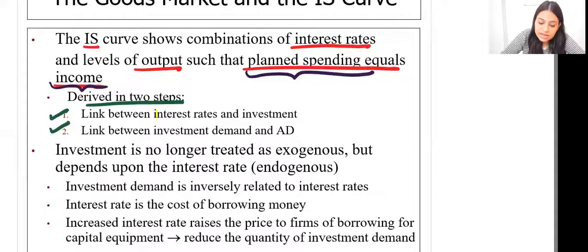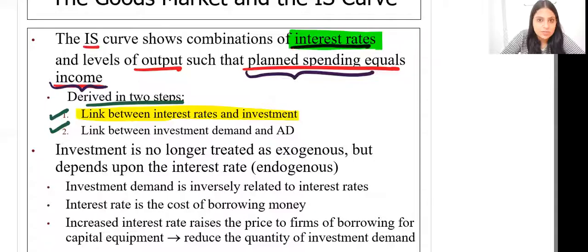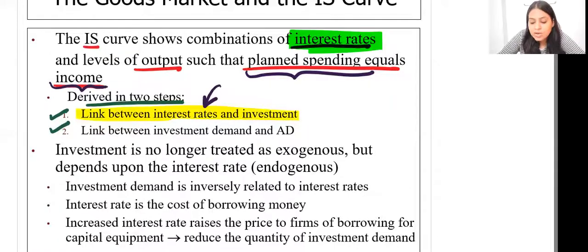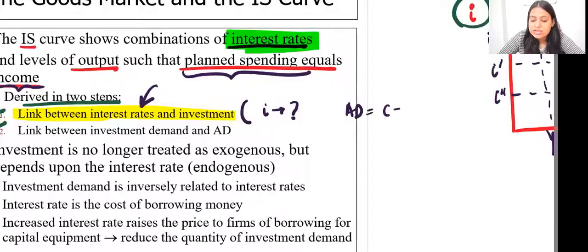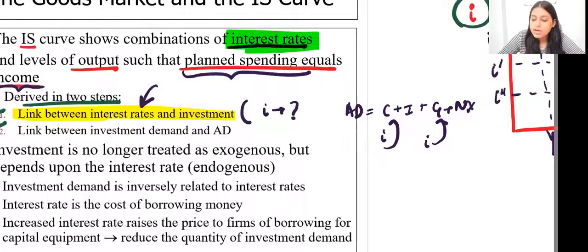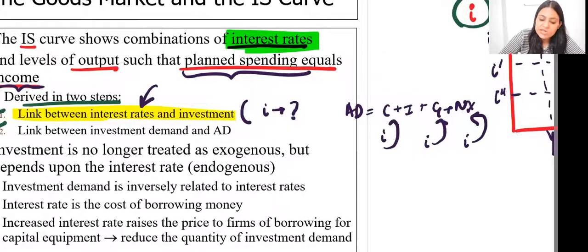What is the IS curve doing? We want interest rate as part of the IS curve, so we have to bring interest rate into the model. We know that AD equals C plus I plus G plus NX. Interest rate cannot affect consumption, government expenditure, or net exports directly. The only way interest rate can enter the model is through the level of investment.